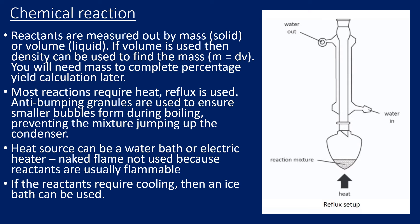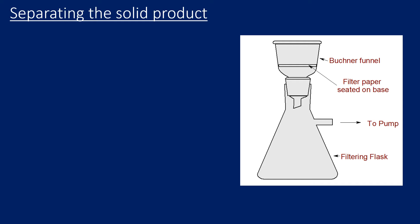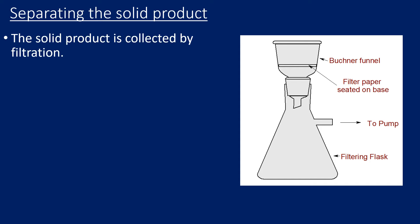On occasions you may be required to cool your reaction, in which case you would use an ice bath. The next stage is to isolate our solid product. This would be called our crude product because it would be impure at this stage, and it would be collected by filtration.